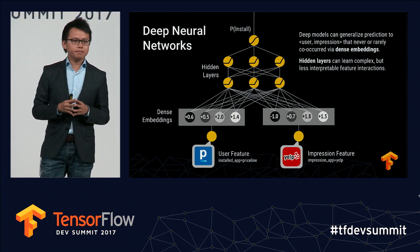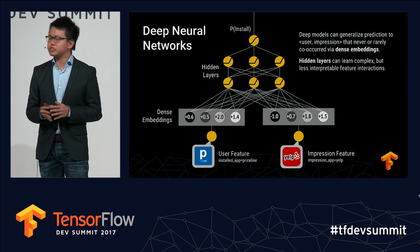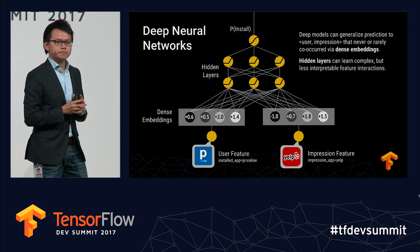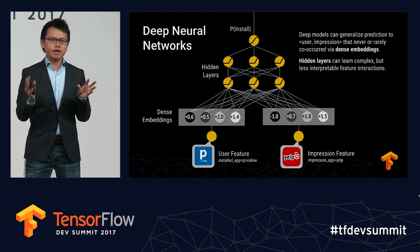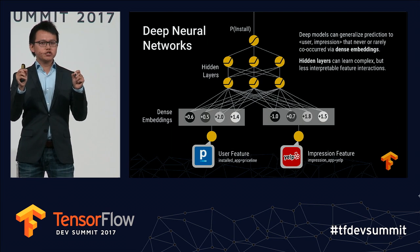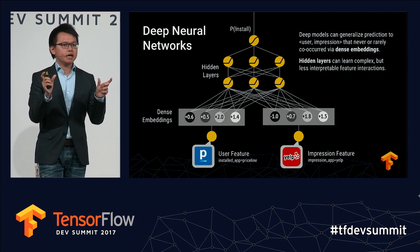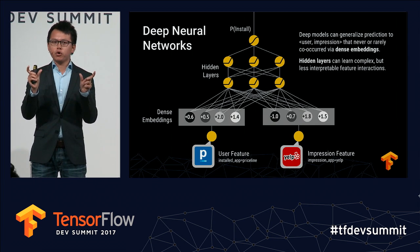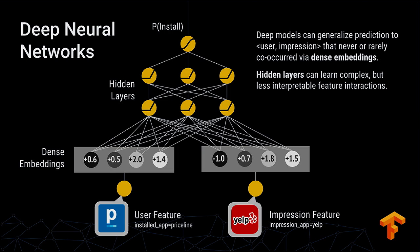Starting from the bottom, you still have your base binarized features — user installed Priceline, and let's say impression app is Yelp. If you've never shown Yelp to people who installed Priceline, you cannot memorize that combination. One way to train this: for each unique feature ID, you look up a dense embedding vector, initialized randomly. Initially you make a poor prediction, compare the error against the ground truth label, and start adjusting your embedding. Over time, the embeddings act like automatically extracted high-level features that well describe these base features. Combined with hidden layers on top, you can automatically learn complex interactions between these base features.